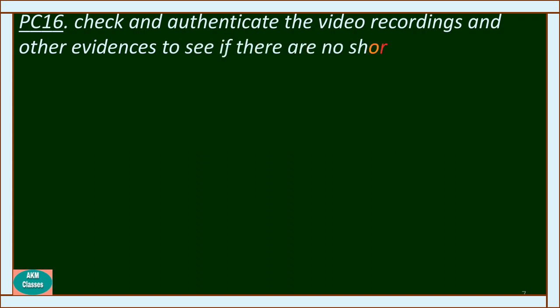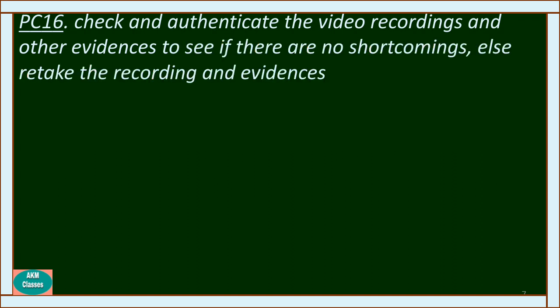PC 16 is Check and Authenticate the Video Recording and Other Evidences to see if there are no shortcomings — else retake the recording and evidence. When we complete the assessment and collect evidence, we have to check that there are no shortcomings, no wrong marks, no wrong names, and no missing attendance. If there are shortcomings, we have to redo or correct them. If the recording is wrong, we retake it; if the paperwork is wrong, we make it accurate. In this way we can authenticate the evidence.